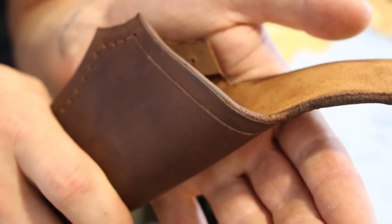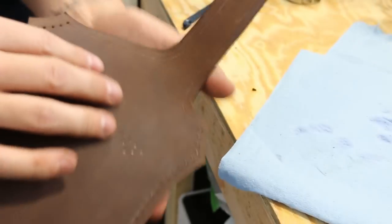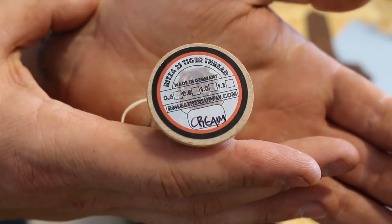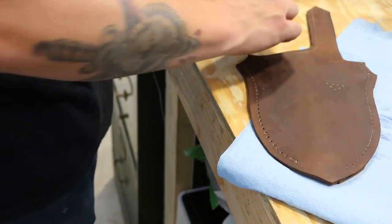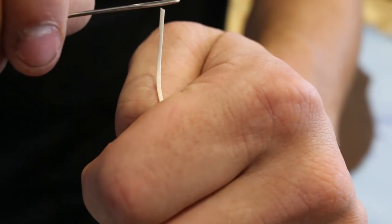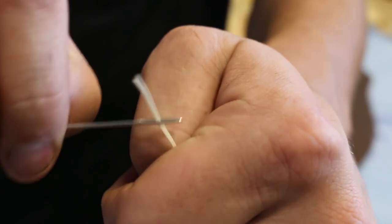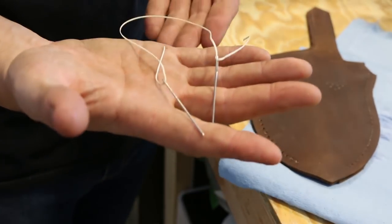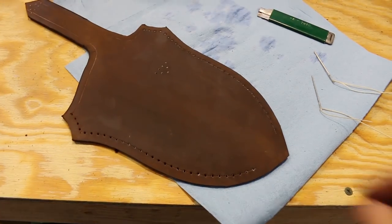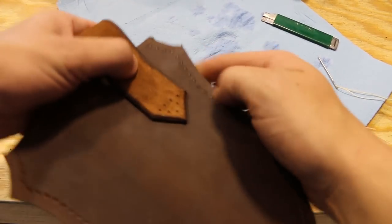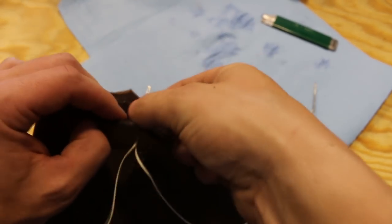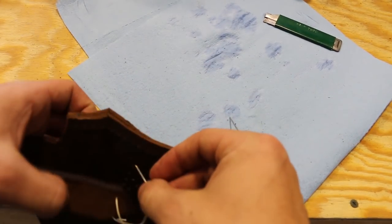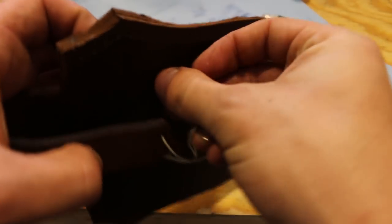Now that that's done, I'll be stitching it all together starting with the belt loop. I'm using Ritza 25 Tiger thread and I'll be using a saddle stitch technique with two needles. The most important part about saddle stitching is being consistent with your motions. I won't go into depth with this video, but I'll leave some links in the description so that you can learn how to saddle stitch.